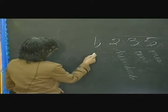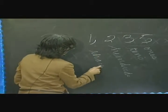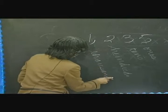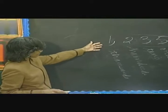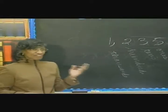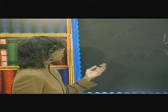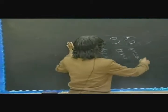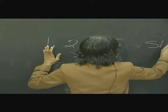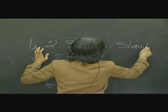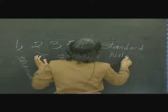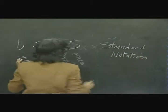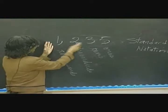And then we get to the thousands. This is the thousands place. The digit in the thousands place is one. So those are the symbols for the number 1,235. This is called standard notation, because this is the way we write the number. You need to write that down in your notes: standard notation.